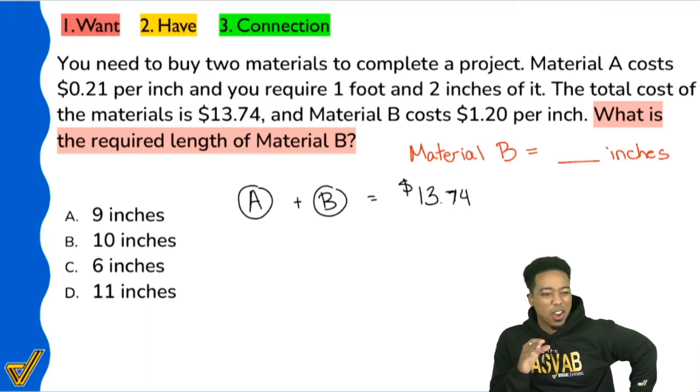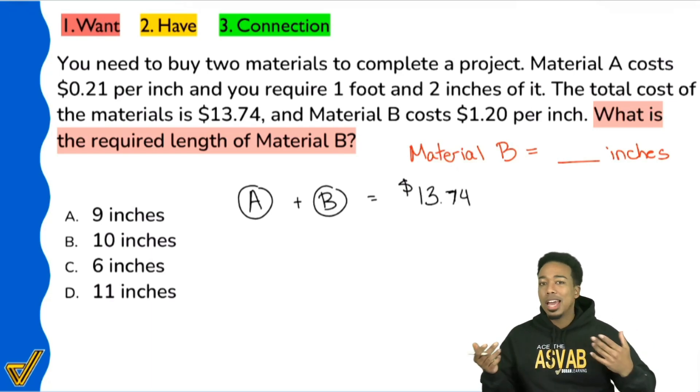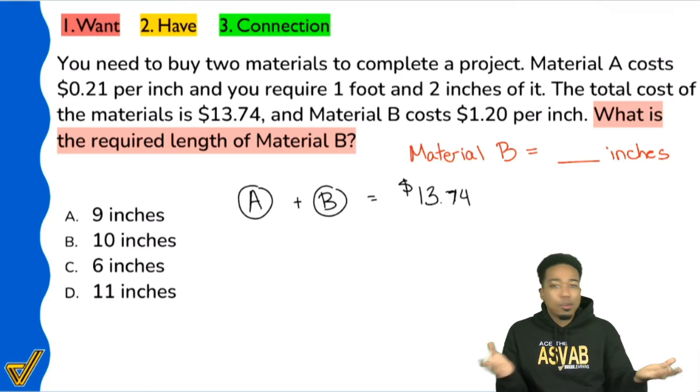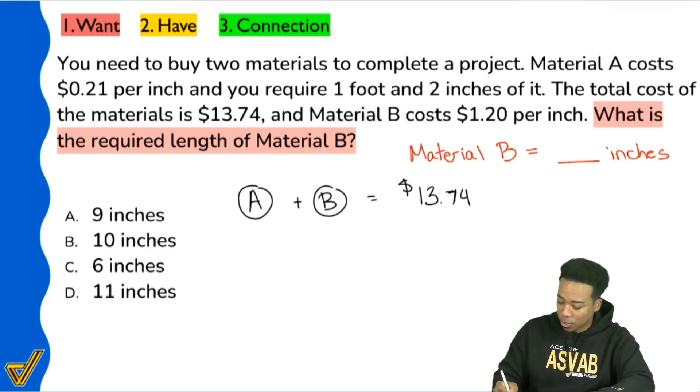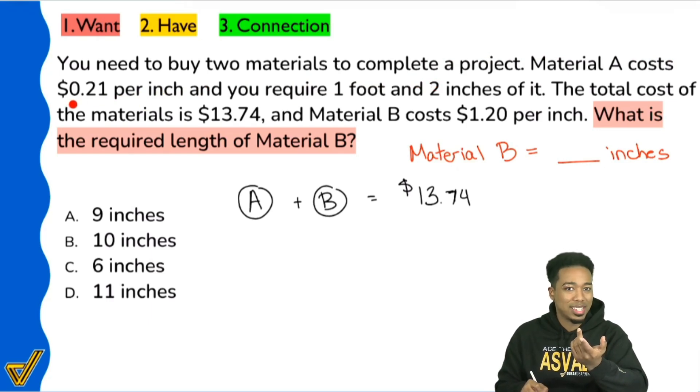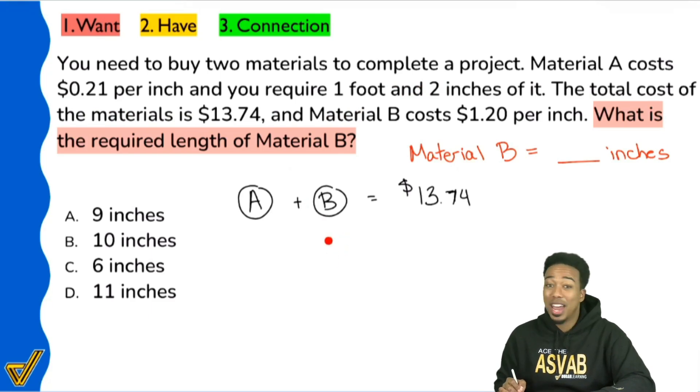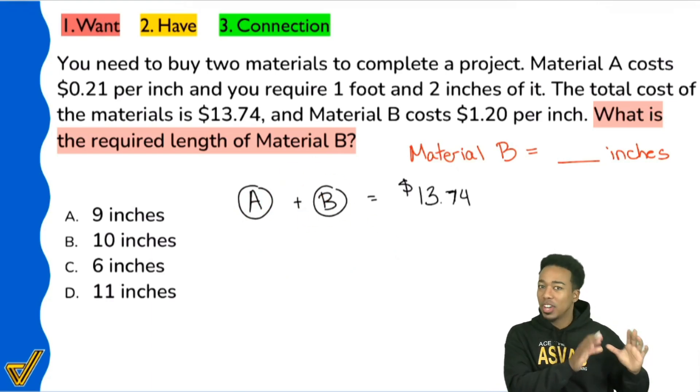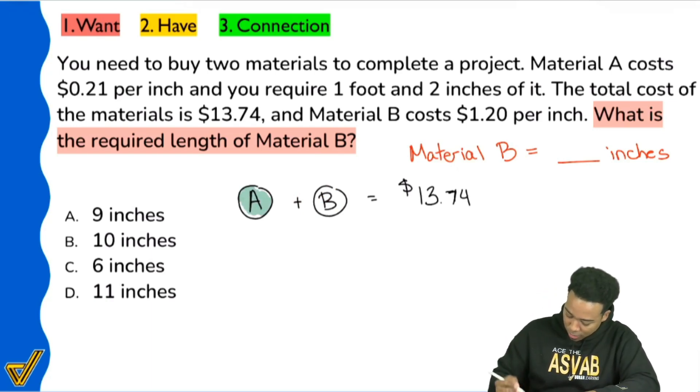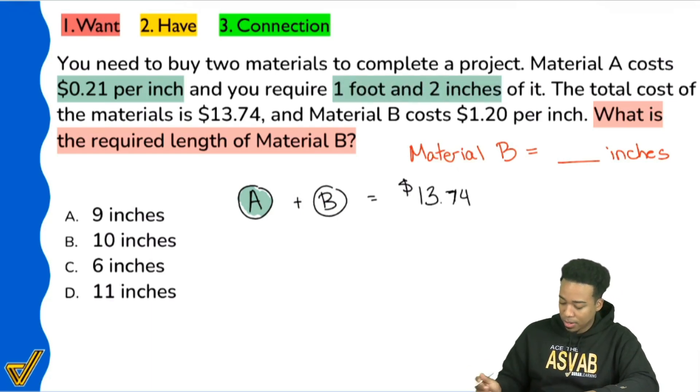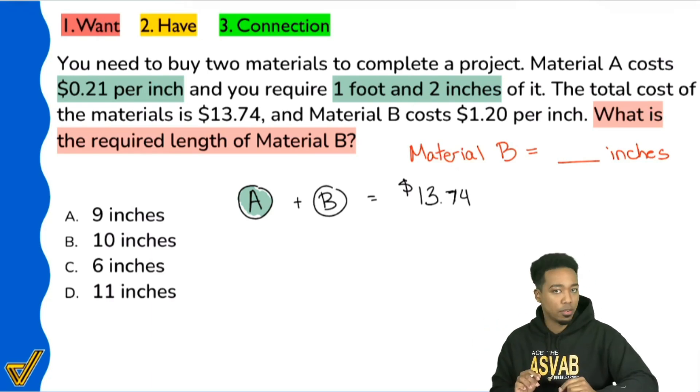So what's the connection? How am I actually going to get to the length of material B? Well, we need to understand this very intuitive principle. If we have a cost per inch and we have the number of inches, we multiply those together to get the cost of either material. So for material A, we see the material A costs 21 cents per inch and you need one foot and two inches of it. So what we'll do is multiply the 21 cents by whatever this is, and we'll get the cost of material A. For material A, we have 21 cents multiplied by one foot, two inches.